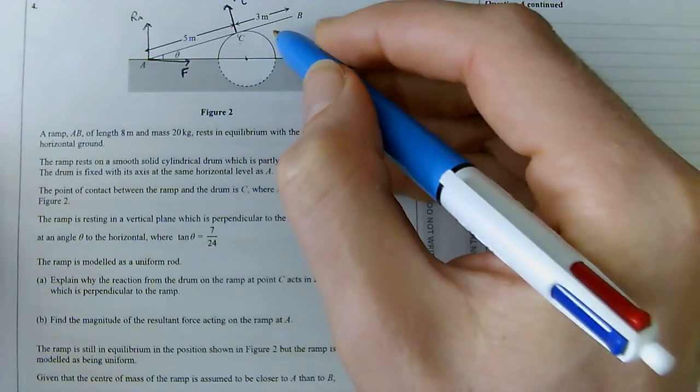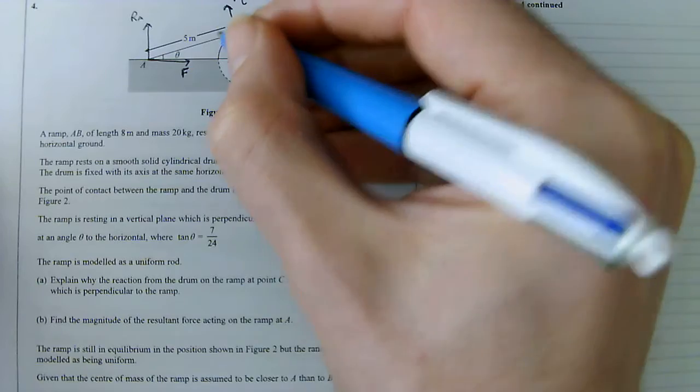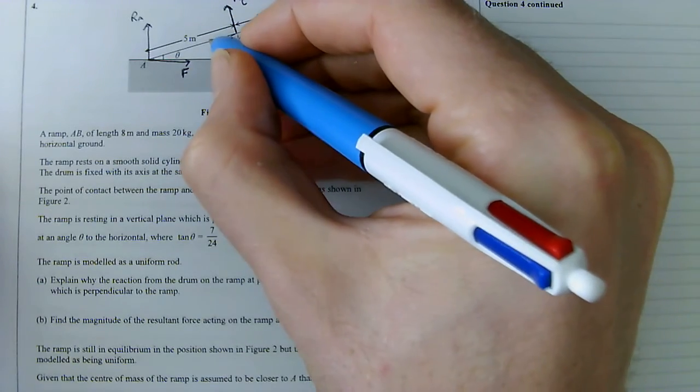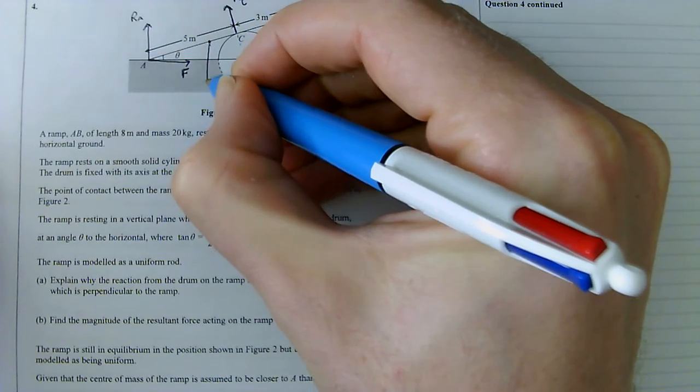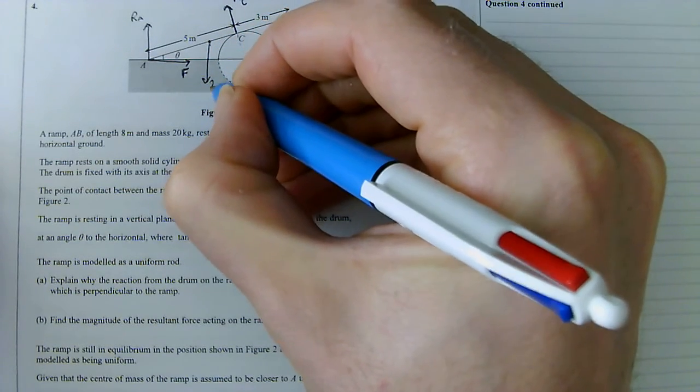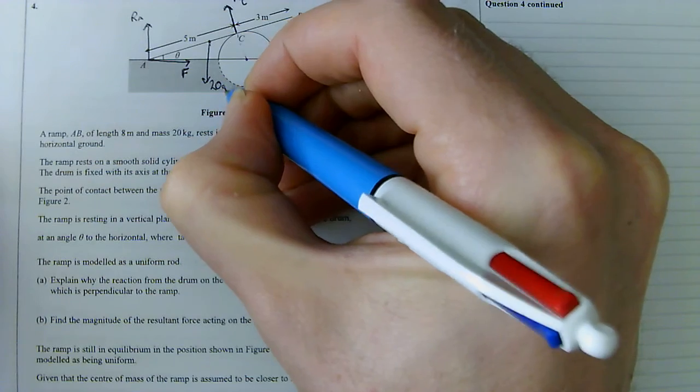The only other force that I need to include then is my weight. It's modeled as a uniform rod, so it's 8 meters long. So 4 meters along that rod I'm going to have its weight, which is going to be 20g.